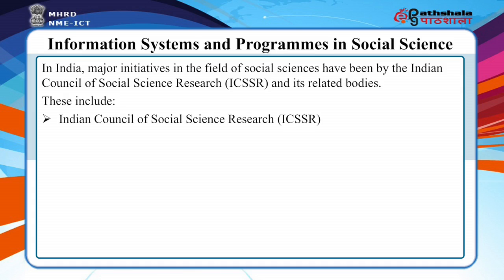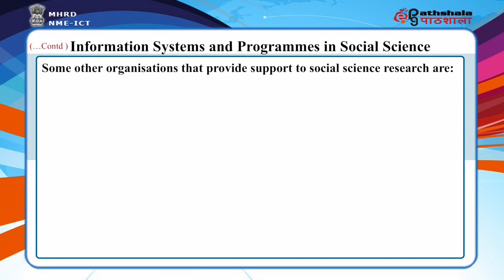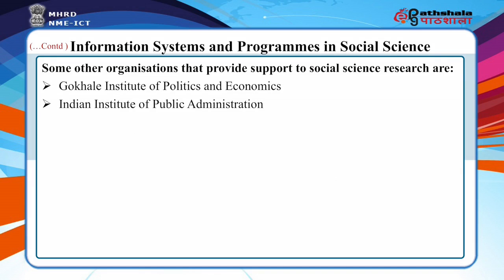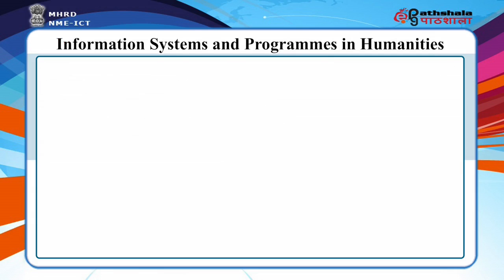These include the Indian Council of Social Science Research, UGC Inter-University Centre for International Studies, UGC Inter-University Centre for Humanities and Social Sciences, and the Indo-American Centre for International Studies. Some other organizations that provide support to social science research are the Gokhale Institute of Politics and Economics, Indian Institute of Public Administration, SNDT Women's University Documentation Centre, National Council of Applied Economic Research, and Tata Institute of Social Sciences.